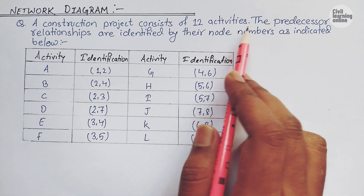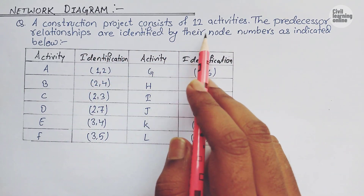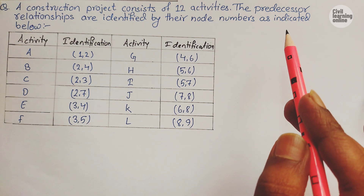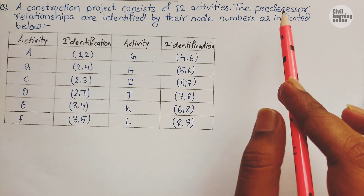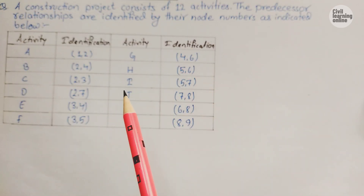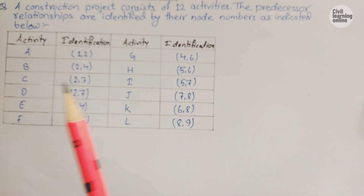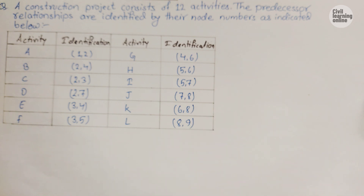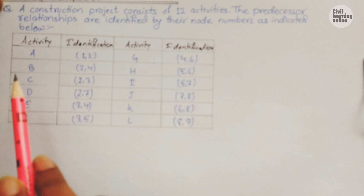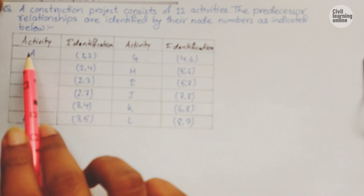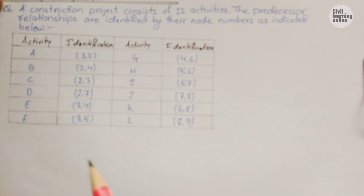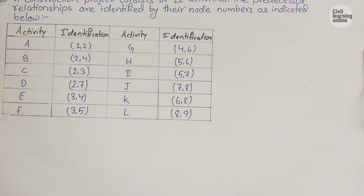...consists of 12 activities. The predecessor relationships are identified by their node numbers as indicated below. Before beginning the solution, I would like to explain predecessor activities once again. Predecessor activities are those activities which are to be performed before the commencement of another activity — these must be completed before the next activity can start. We are provided activities from A to L, indicated by nodes.